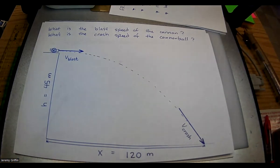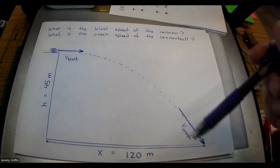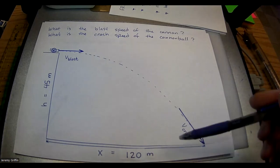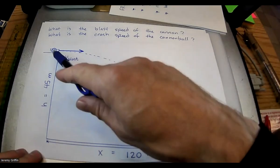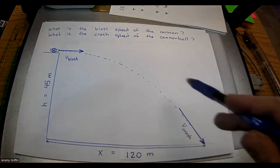This is a projectile question. We're going to take kinematic motion and put it into two dimensions — so instead of just forwards and backwards or just up and down, we'll have both going on at the same time, because this cannonball is on a two-dimensional path.